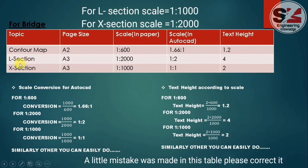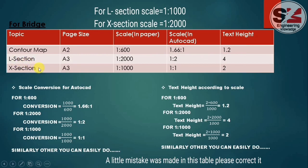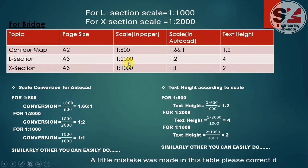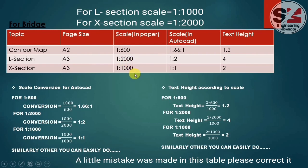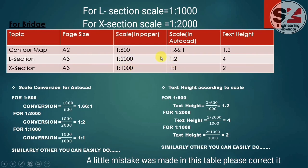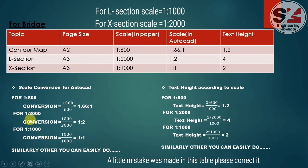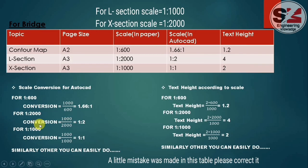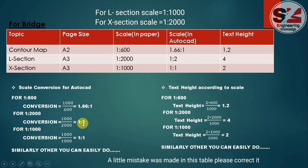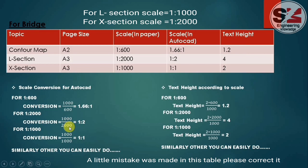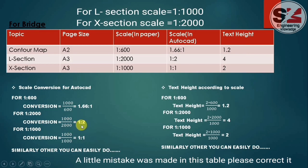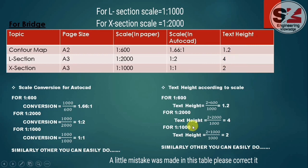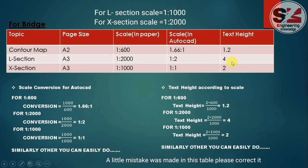Similarly, for the order — in the else section and the chorus section — I have taken the paper size as A3, and the scales as 1:2000 and 1:1000. After conversion using the formula — 1000 divided by 2000 — we get 1:2 and 1:1 respectively. And for the text height using the same formula, we get 4 and 2.